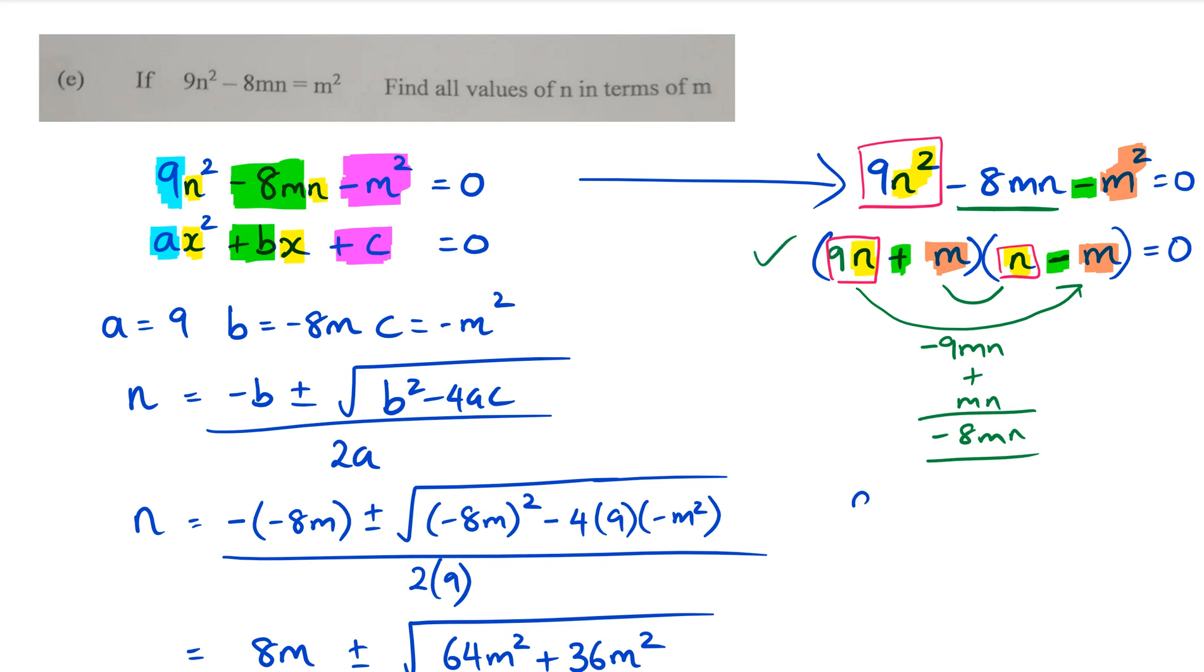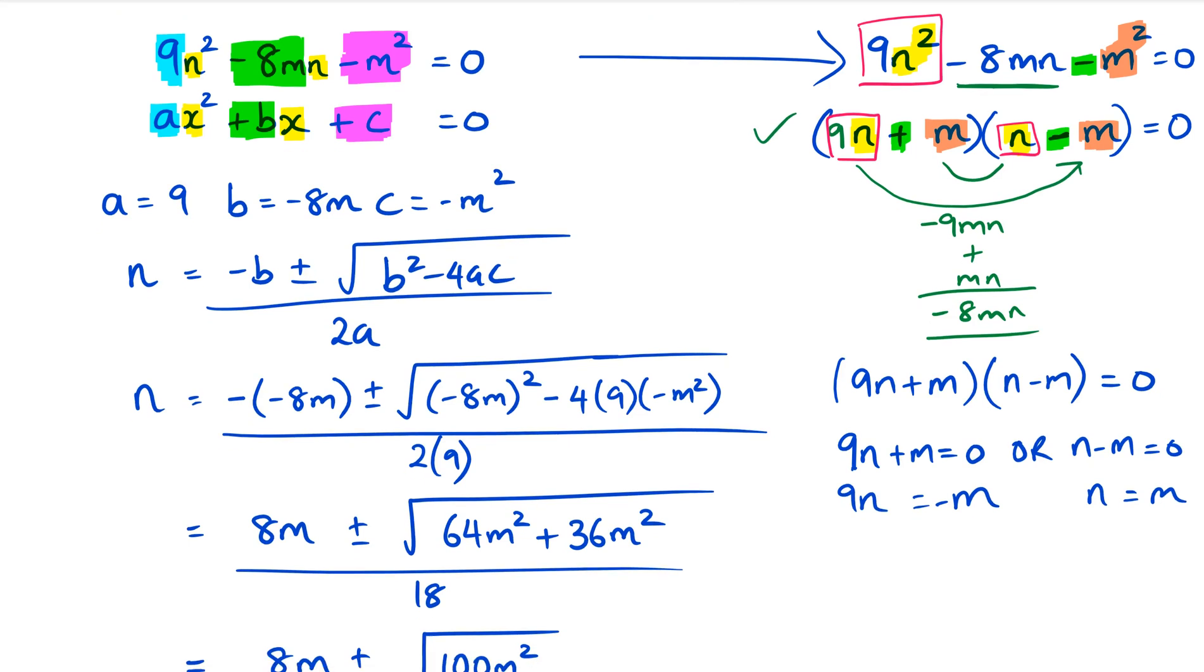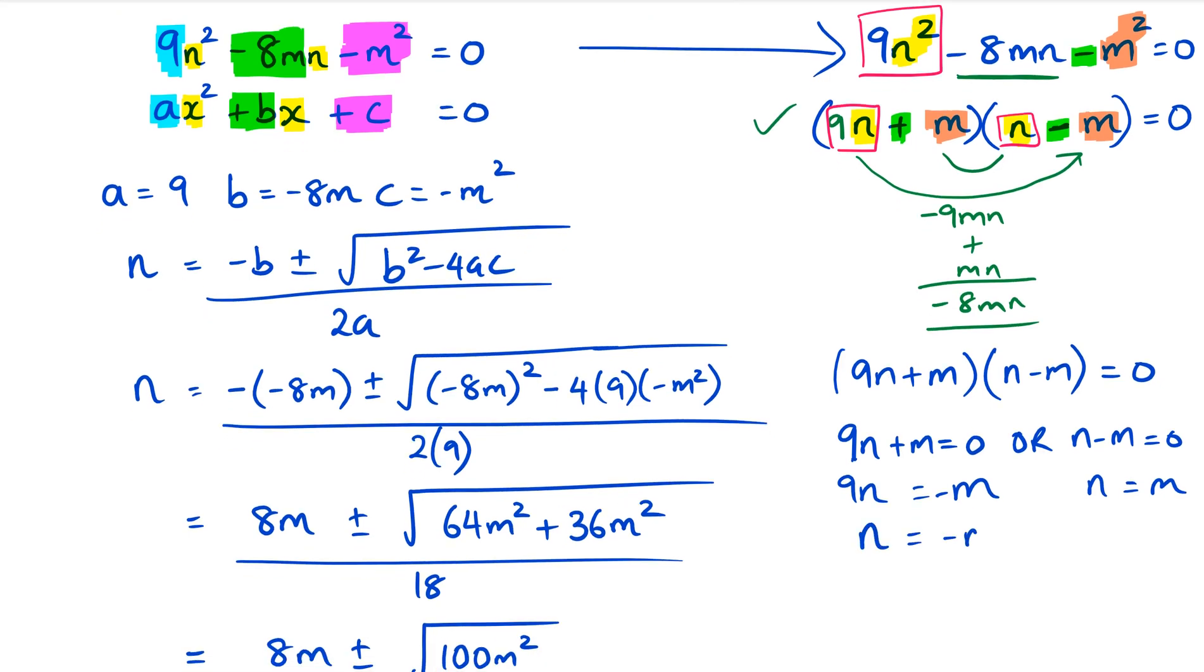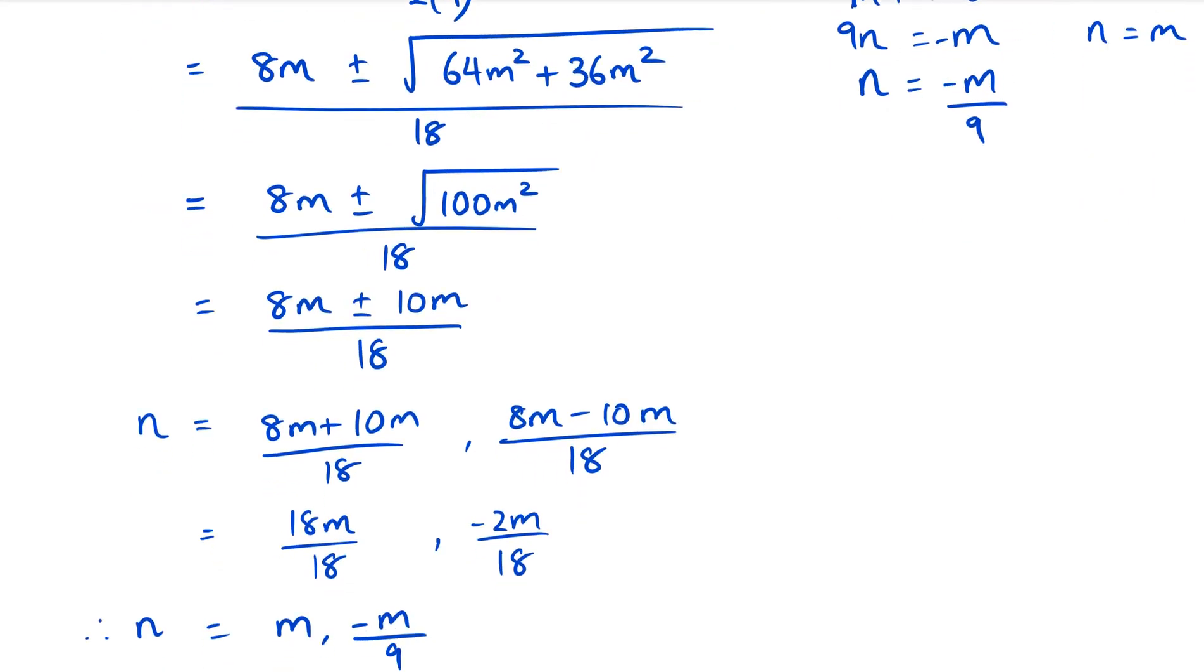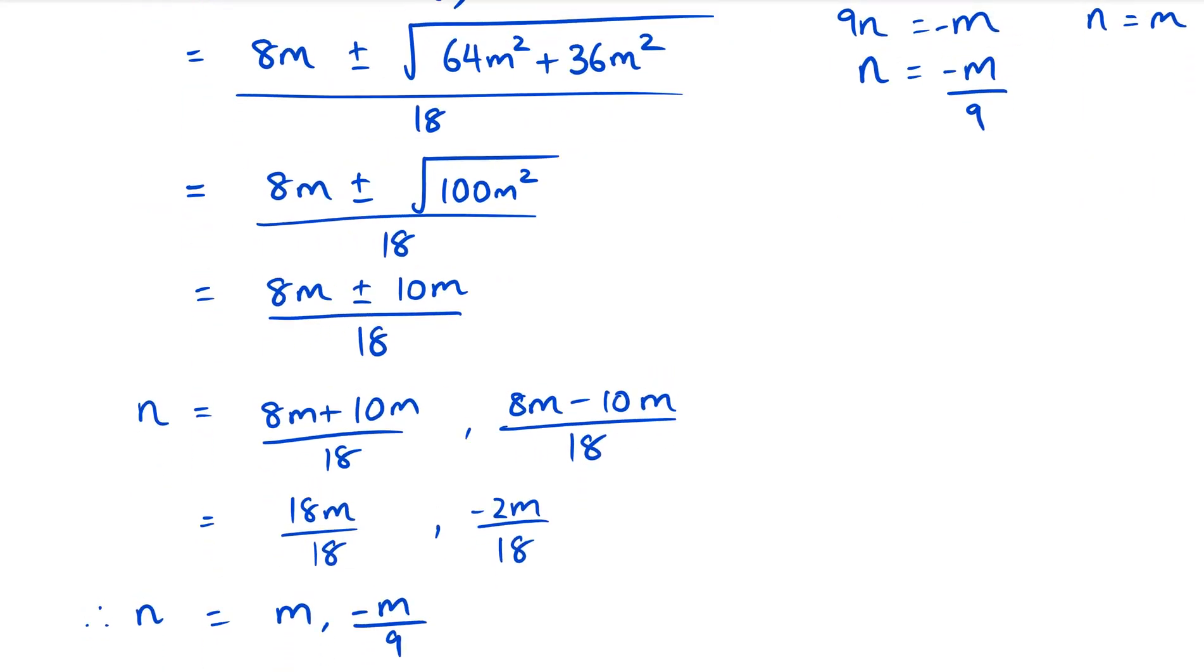Once that's done I can rewrite it as 9n plus m multiplied by n minus m equals zero. So then I've got 9n plus m equals zero or n minus m equals zero. So n in this case is m, and then in this case 9n equals negative m and n equals negative m divided by 9.